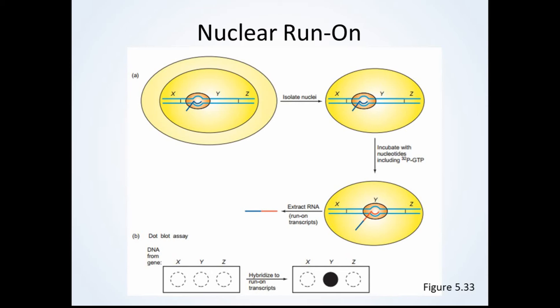After performing a nuclear run-on, a dot blot is often performed. A dot blot is an assay that allows scientists to discover if specific RNA fragments were produced in the nuclear run-on. To perform a dot blot, single-stranded DNA probes are unlabeled and are added to labeled sections on nitrocellulose. In this case, there is a DNA probe for gene X, gene Y, and gene Z in the sections that are labeled on the left side of the figure. The labeled transcripts from the nuclear run-on are then added to the nitrocellulose and allows for hybridization to occur if possible.